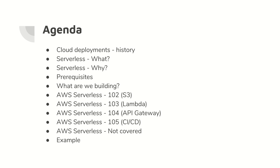First, we will go over cloud deployment — a brief history of how cloud deployments have evolved. Then we will cover what serverless is and why we should use it. Then we will see what prerequisites you need before going ahead with this video series, and then what we are really trying to build. The series is divided into several videos: serverless with S3, serverless using Lambda, serverless using API Gateway, and serverless CI/CD.